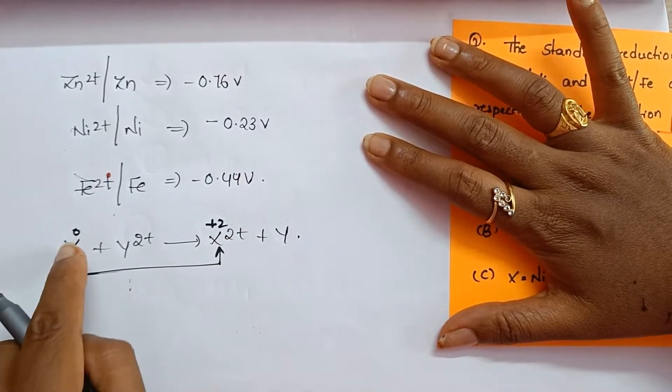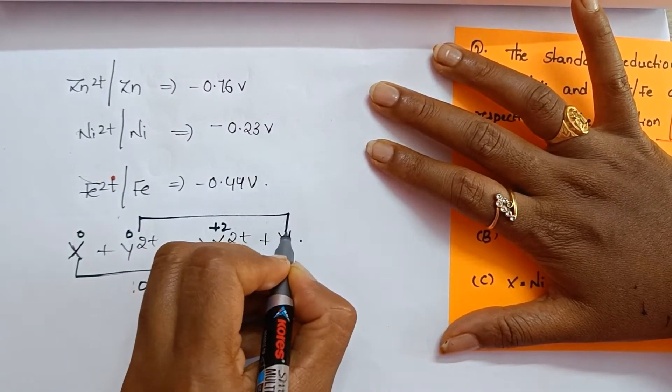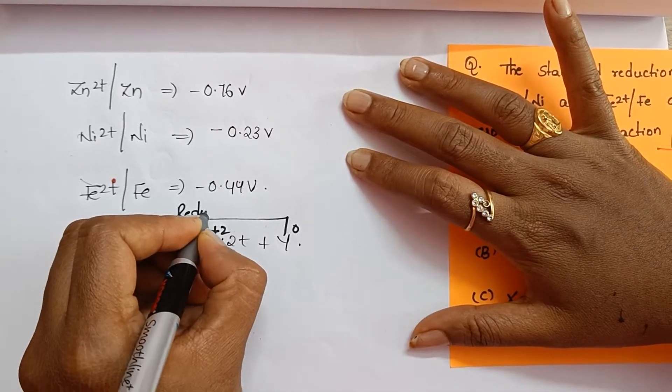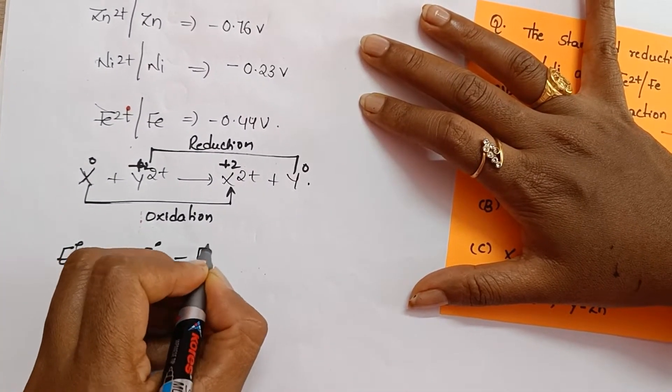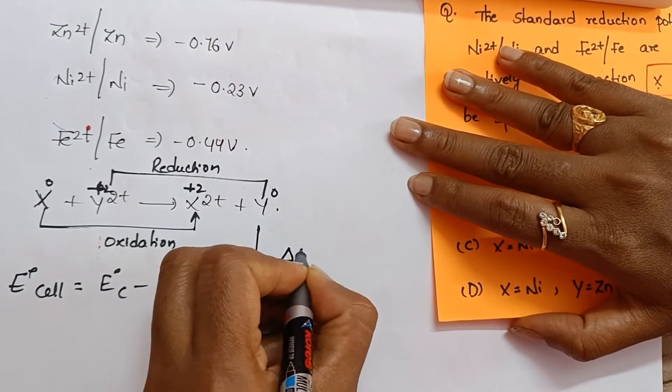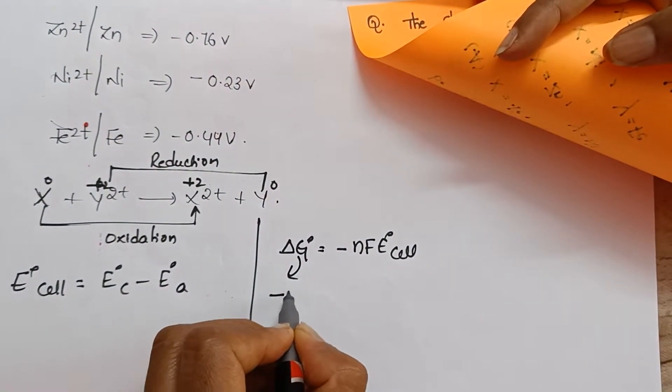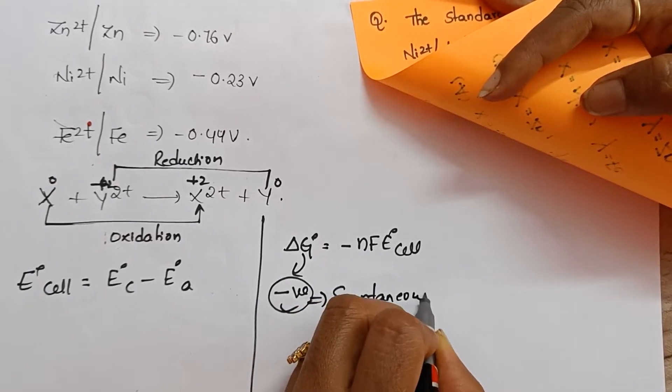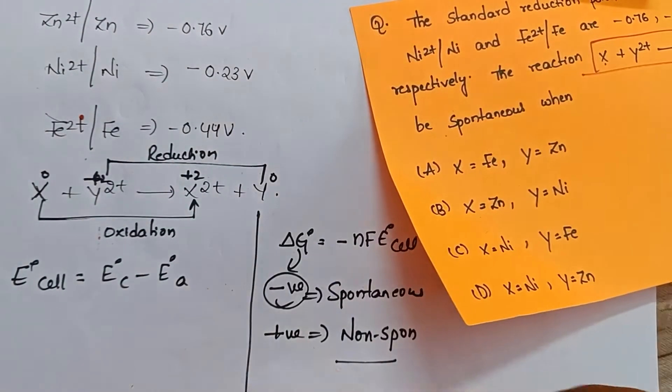This is the data given in the question. Suppose here X is converting into X2+. 0 is converting into +2. Increase in oxidation number is oxidation. And +2 is converting into Y, 0 oxidation state. This is +2, it is 0 oxidation state. Decrease in oxidation number is called reduction. What is our formula? E naught cell is equal to E naught of cathode minus E naught of anode. They are asking whether the reaction is spontaneous or not. So what you have to do is delta G naught is equal to minus NFE naught cell. If delta G naught value is negative, then the reaction is spontaneous. If delta G naught value is positive, the reaction is non-spontaneous.